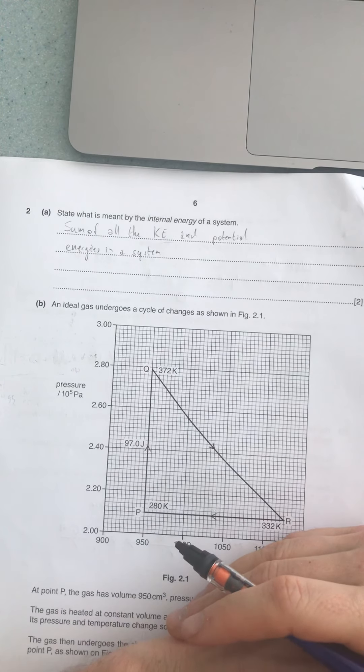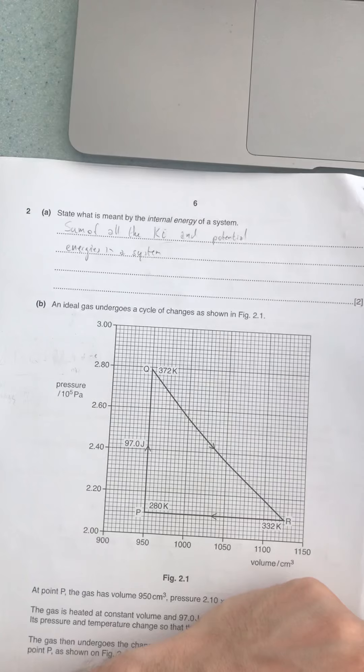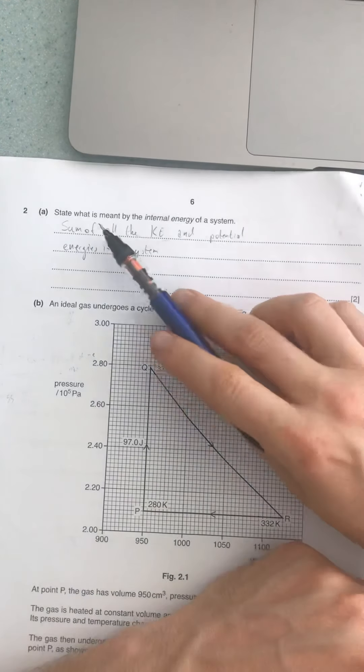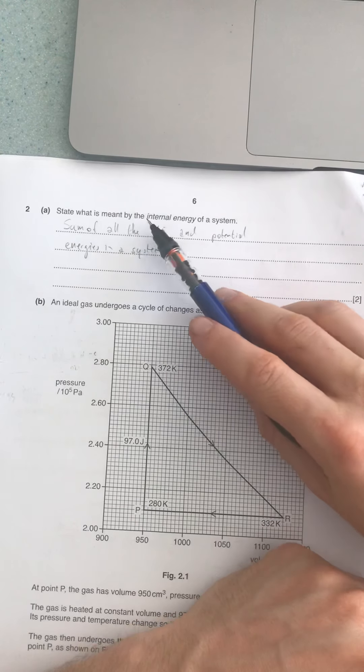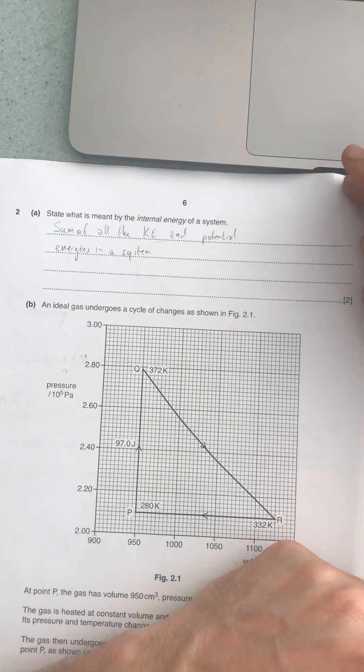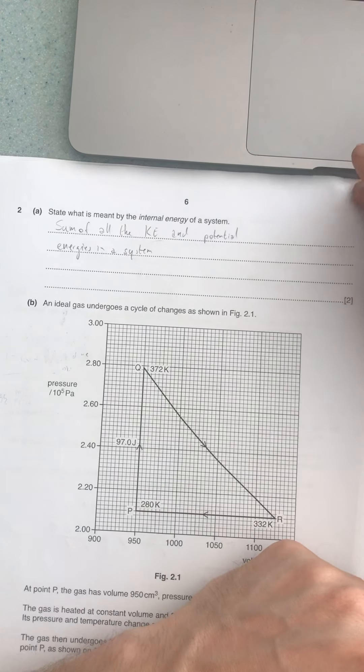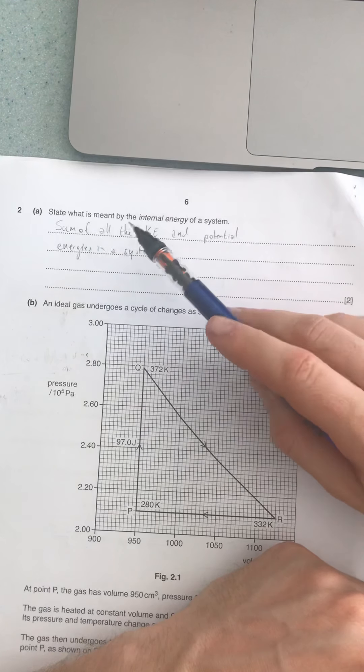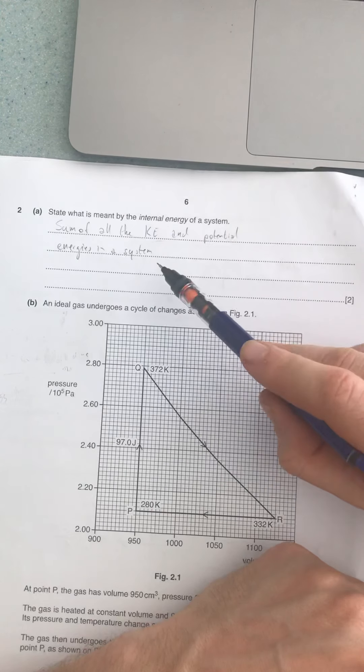Okay, we've got a question here about thermodynamics, and I think this is one which we would have actually done first in the topic. It's telling us to state what is meant by the internal energy of a system. That's just remembering what something actually means, and it is related to temperature, but we can't say it's the same thing. It is the sum of all the kinetic and potential energies in the system, and you're done.